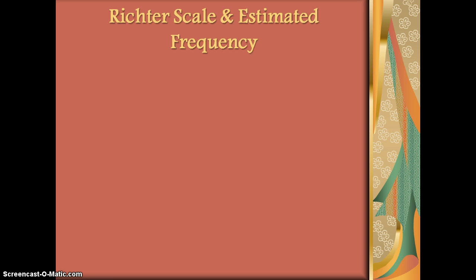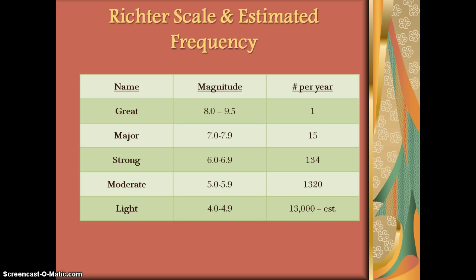The Richter scale. We use this to determine how strong an earthquake is. On average, those that would cause us the most harm — eight or more — there's only about one per year. As you go down the Richter scale to the less major earthquakes, you can see the frequency does increase.